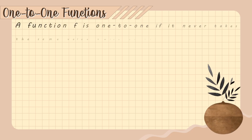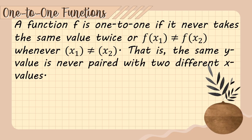A function f is one-to-one if it never takes the same value twice — that is, f(x₁) is not equal to f(x₂) whenever x₁ is not equal to x₂. In other words, the same y value is never paired with two different x values.